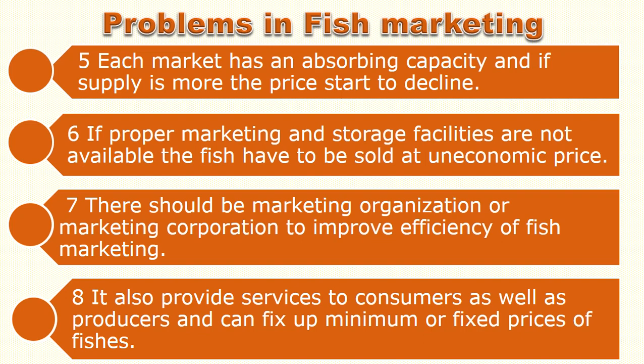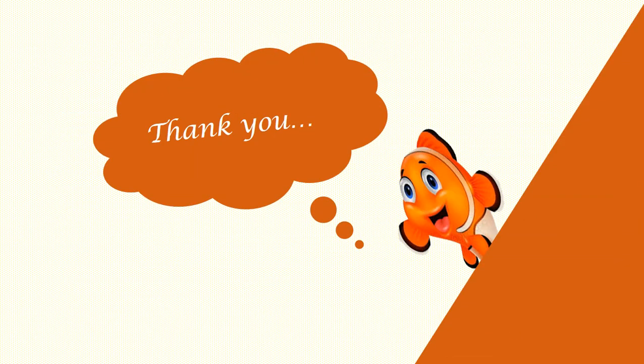Marketing and storage facilities are not available. The fish have to be sold at an uneconomic price because fishermen don't have storage capacity or facility. That is why they sell fresh fish to consumers, wholesalers, or retailers at a lower price immediately. The present marketing system is developed keeping the interest of market intermediaries. There should be a market organization or market cooperation to improve efficiency of fish marketing, provide service to consumers as well as producers, and fix a minimum or fixed price for fishes.